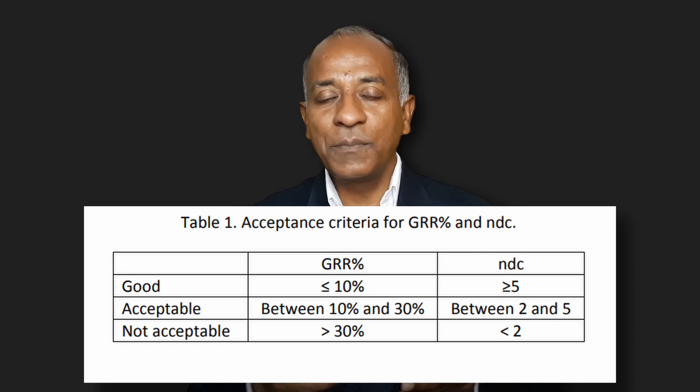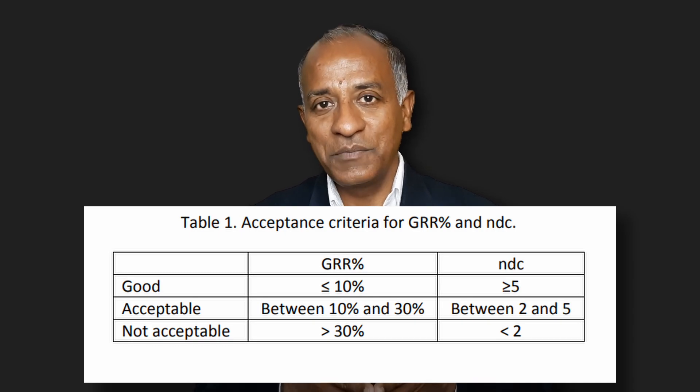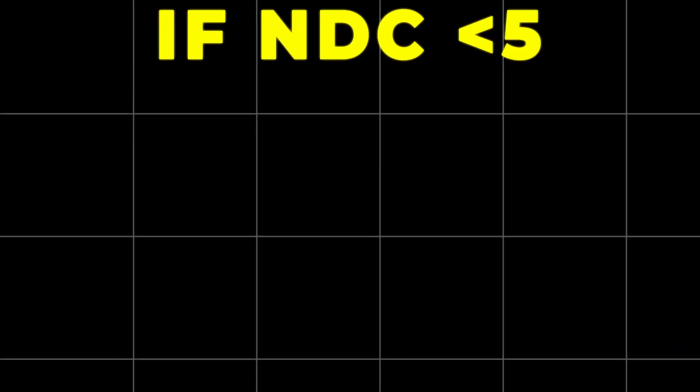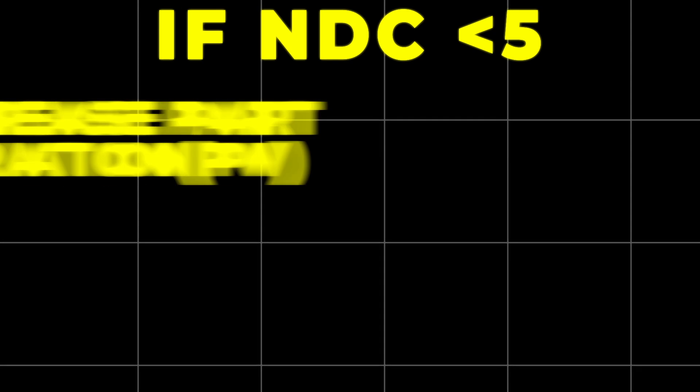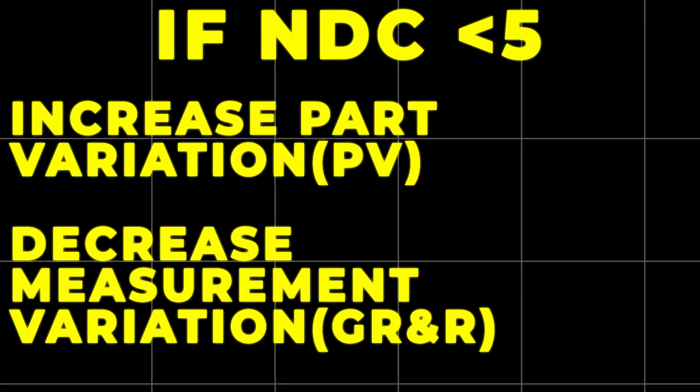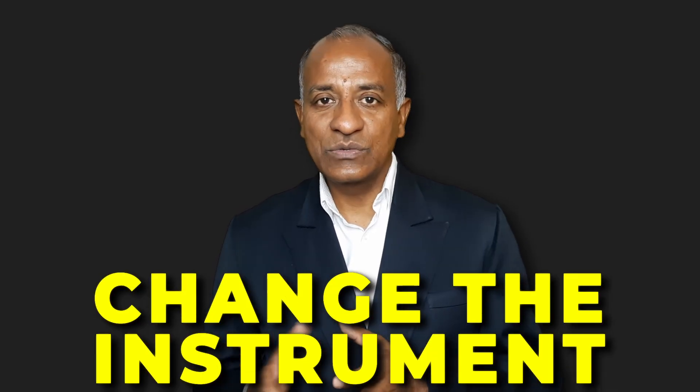What to do if NDC is less than 5? There are a couple of steps. The first is to look at how we can increase part variation or decrease measurement variation — that is, GRR. The second is to change the instrument; maybe use a better accuracy instrument, for example switching from a vernier caliper to a micrometer.